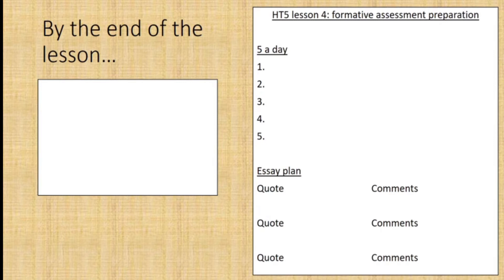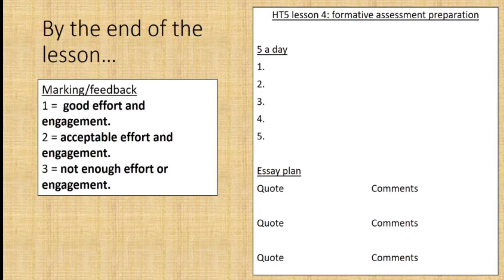Now is a good time to talk about the quality of what you do as well. When we're marking your work, we are keeping a record and grading your effort and the quality of work from one through to three. One means good effort and engagement — tasks are completed at a standard which reflects what you can do when you work hard. Two means it's acceptable; there may be room for improvement and your teacher may give you some feedback. Three is just not acceptable — not enough effort, not enough engagement.